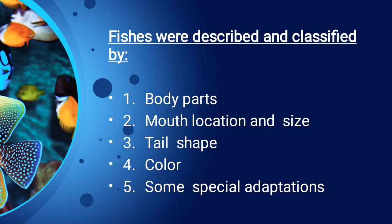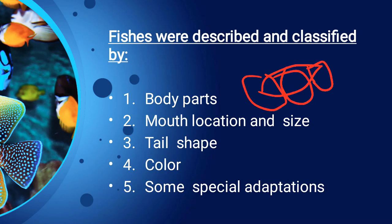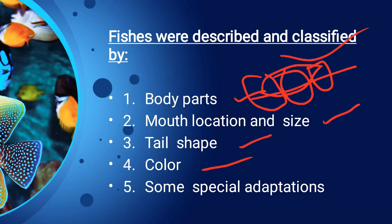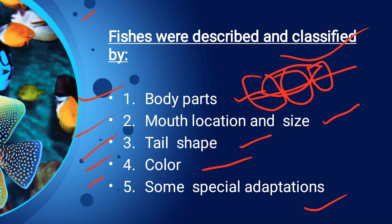How do we classify the fish? The fish body is divided into head, trunk, and tail. When it comes to classification, the key characters are: body parts, mouth orientation and location, tail shape, color, and special adaptations. Every fish species differs — different mouth sizes, different tail shapes, different colors. Some are cold water fish, some are warm water fish. Fish are classified on the basis of all these characters. We will continue this classification in the next class.